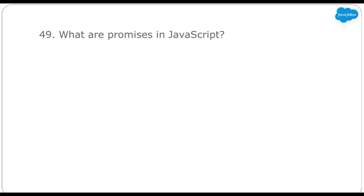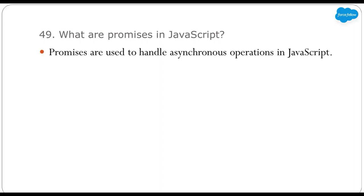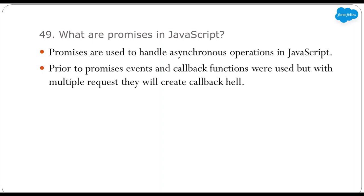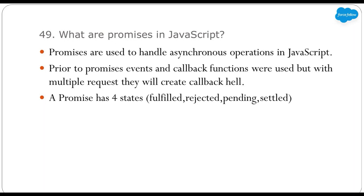Next: what are promises in JavaScript? Promises are used to handle asynchronous operations in JavaScript. Prior to promises, event and callback functions were used, but with multiple requests they create callback hell — meaning callbacks nested inside other callbacks. Promises are easier to manage when dealing with multiple asynchronous operations. In LWC, we generally use promises when calling Apex methods with the imperative approach. A promise has four states: fulfilled (succeeded), rejected (failed), pending (still waiting), and settled (either fulfilled or rejected).